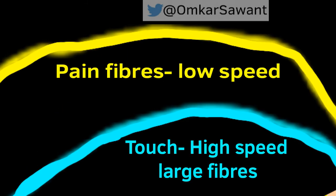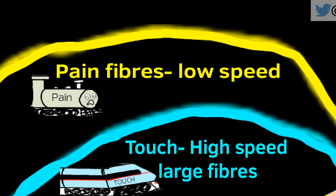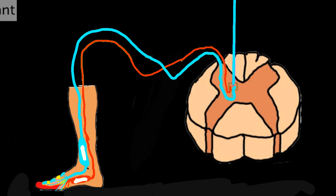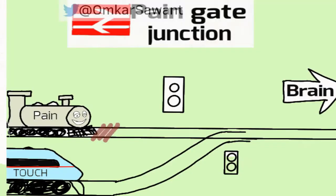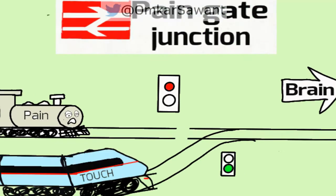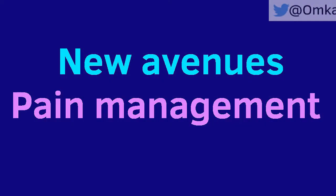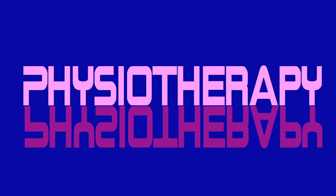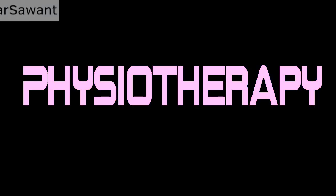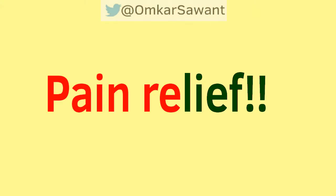The speed of pain fiber transmission is much slower compared to the transmission of touch. Therefore, stimulation of these high-speed touch fibers would effectively block the transmission of pain and help promote pain relief. This opened a new avenue for physiotherapy in pain management and also introduced the use of the TENS machine for pain relief.